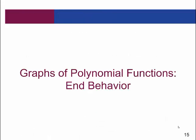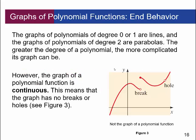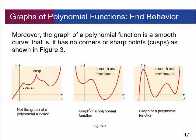Now let's talk about graphs of polynomial functions and their end behavior. Graphs of polynomials of degree 0 or 1 are lines; degree 2 are parabolas. The greater the degree, the more complicated the graph can be. However, the graph of a polynomial function is continuous — there are no breaks or holes. These polynomial functions are always nice, smooth curves with no corners, sharp points, or cusps.